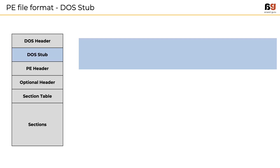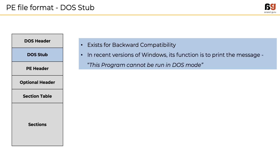Next, we have the DOS stub, which mostly exists for backward compatibility. DOS stands for Disk Operating System, a predecessor of Microsoft Windows. In recent times, as there are no applications built for DOS, this part of the PE file is simply used to print the message: 'This program cannot be run in DOS mode.'